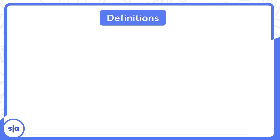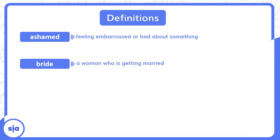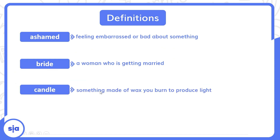The first word is ashamed. What's the meaning of ashamed? Ashamed means feeling embarrassed or bad about something — خجلان أو مكسوف من حاجة. Bride — this is a woman who is getting married; العروسة. والعريس is the bridegroom. Candle — something made of wax that you burn to produce light — الشمع.